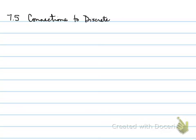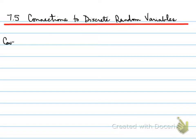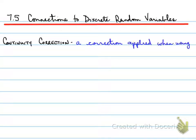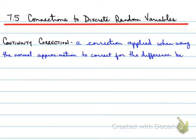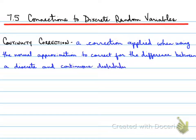7.5 — connections to discrete random variables. A continuity correction is a correction that's applied when using the normal approximation to correct for the difference between the discrete and continuous distribution.